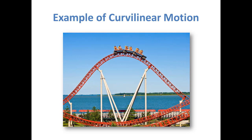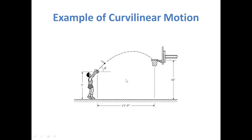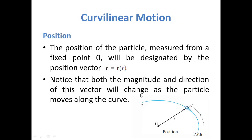Another example is a roller coaster, which can be taken as a body traveling along a curved path. If you want to find the position vector, the velocity vector, or the acceleration vector of this body, we will use curvilinear motion to find out these components. Similarly, a basketball player who wants to put a ball in the basket — when the ball is thrown, it will follow a curved path, which is curvilinear motion.